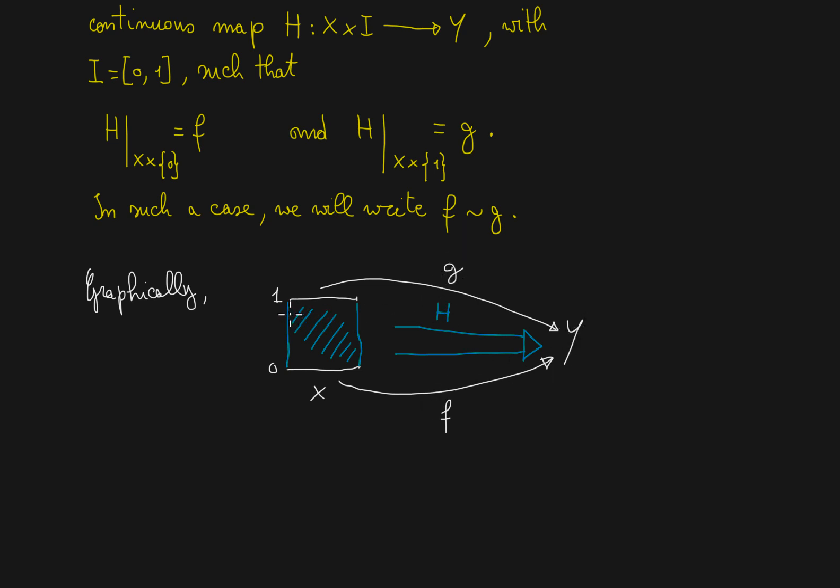Therefore when we restrict to some intermediate level, usually the parameter going from 0 to 1 is called t. So when we restrict at the t level, we will have a function that is something in between f and g. When we are close to 0, the function will look like f. When we are close to 1, the function will look like g.